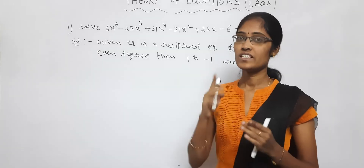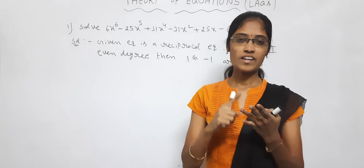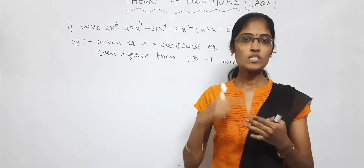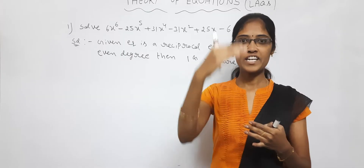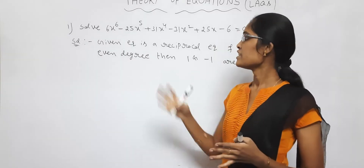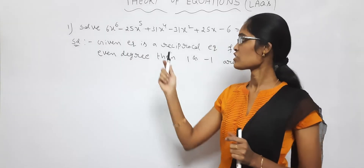So already the questions are x power 6, x power 5, x power 4, and APGP sums. Already I gave you questions. Now we will discuss these solutions. See the first question.